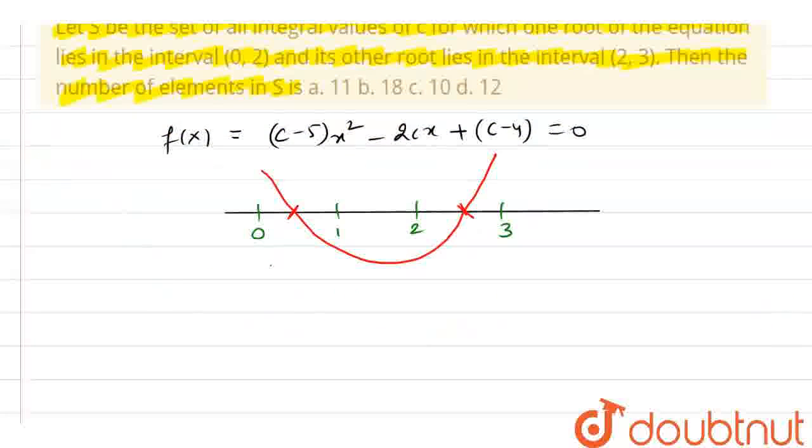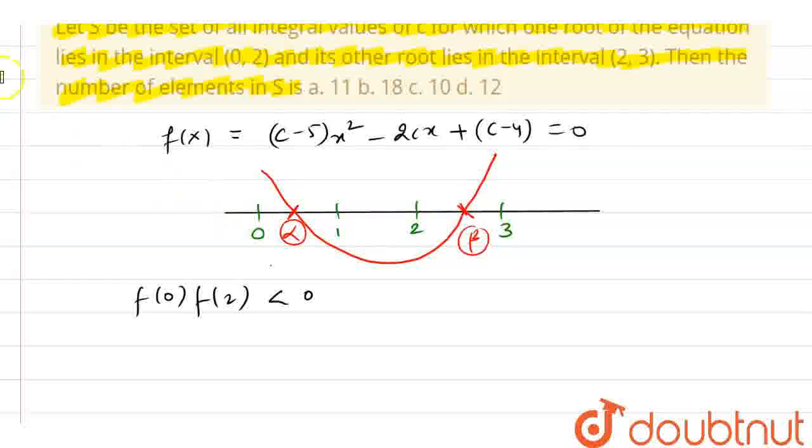Now if I put 0 into f(x), this value is negative. Why? Because for 0 to that root - let's suppose this is my first root alpha here and this is my beta - so in between 0 to alpha, the function is positive, and alpha to 2, we have negative. So the product of f(0) into f(2) is negative.